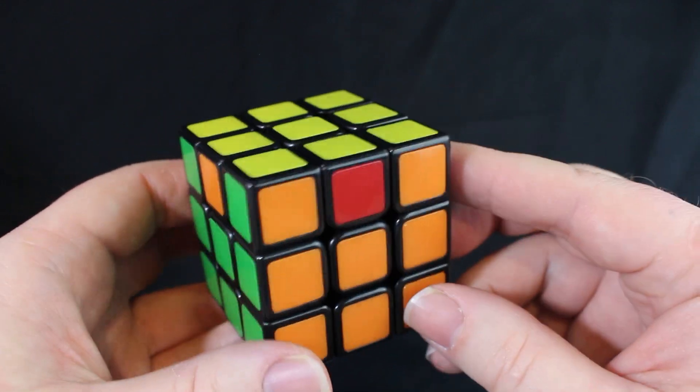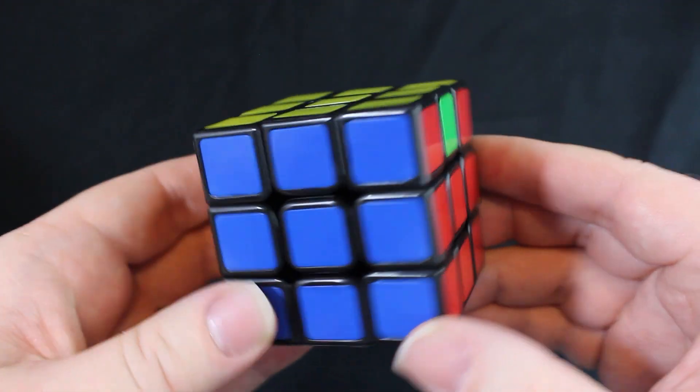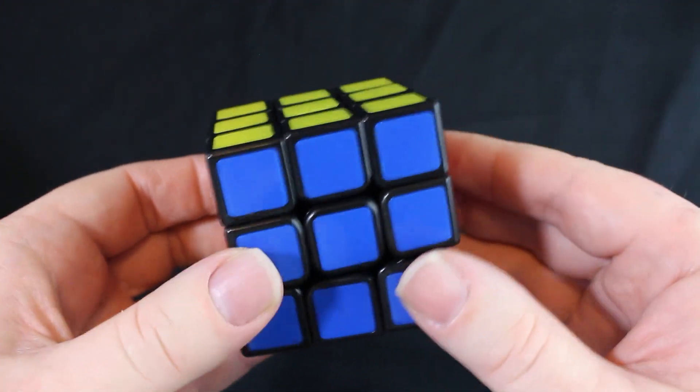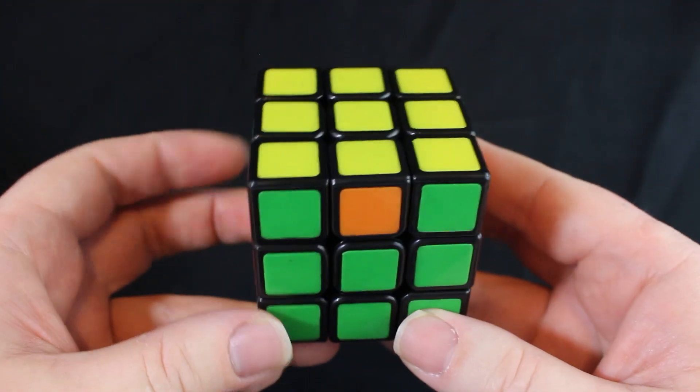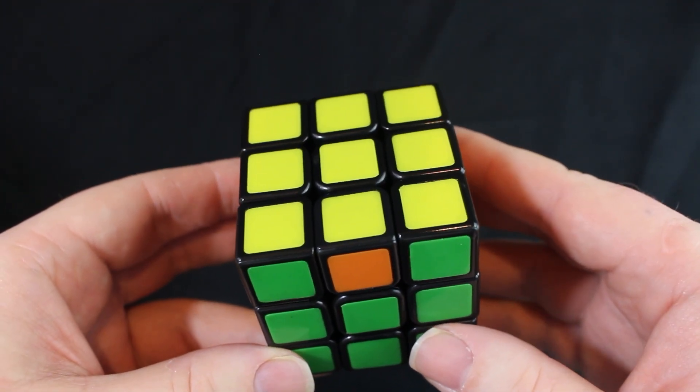First thing you do is look at the sides and try to find the most completed side. For instance, this one would be it. So we're going to move it to the back. Turn that to the back like that and hold it like so. And then we're going to do those moves.